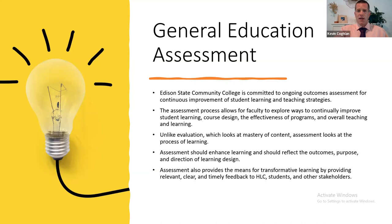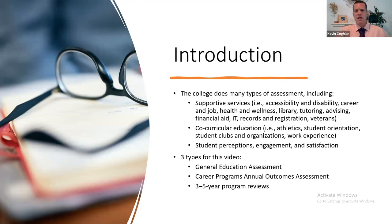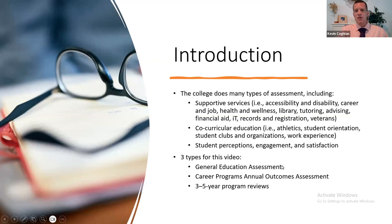We have made decisions to focus on the main areas: supportive services, co-curricular education, student perceptions of engagement and satisfaction, along with general education, career programs, and three to five year program reviews. That's the big core, but we can go beyond and assess all aspects of anything happening at our college. Whenever we go to conferences, it's incredible to hear the diversity of topics being assessed at different colleges. Assessment can be broad, but these are the big ones we do at Edison State, and these three bottom ones are the ones we're focusing on today.